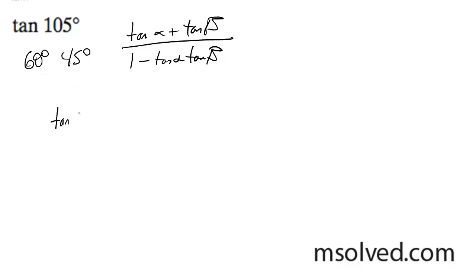So here's what we're going to do. It's going to be tangent of 60 degrees, doesn't matter which order, plus tangent of 45 all over 1 minus tangent of 45, or 60 degrees times the tangent of 45 degrees.